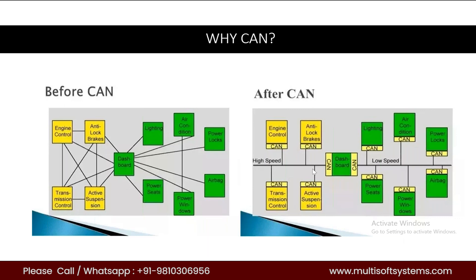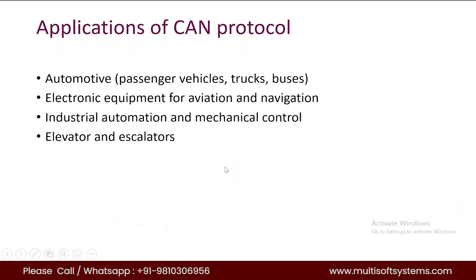The CAN solution requires only two wires — CAN High and CAN Low, as you can see here. The CAN protocol is quite efficient due to its message prioritization and flexibility. CAN protocol was originally designed to address communication issues within vehicles, but later due to its features, it is now used in various applications: automotive (passenger vehicles, trucks, buses), electronic equipment for aviation and navigation, industrial automation and mechanical control, elevators and escalators, building automation, and medical instruments and equipment.